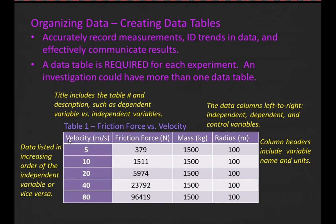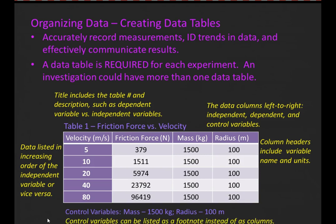Next, let's talk about the column headers. They are titles, so the first letter needs to be capitalized in each word. Also, we need to include the units. For instance, notice velocity—the units are meters per second. We do not put the units with the numbers; we put the units up in the header so the numbers can be clean. So when we put 'meters per second' in the velocity column, everybody understands that every number in that column has units of meters per second. An alternative method for representing control variables is to list them as a footnote rather than as columns—if you list them as a footnote, then you do not list them as columns.